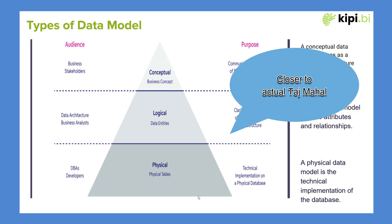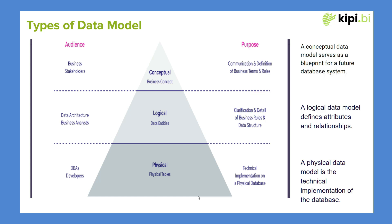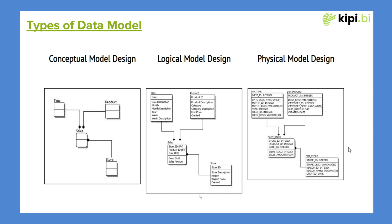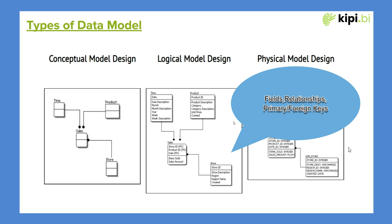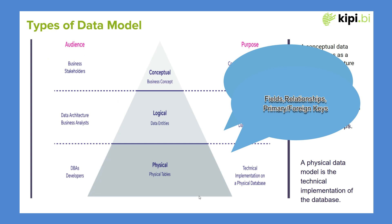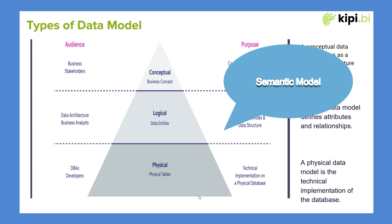Coming back to our retail store: with the logical model we now define attributes and relationships. It's not just about entities — we're talking about attributes like fields: for a product you'll have product ID, description, and category. Relationships and primary keys and foreign keys are defined. For a sales transaction table, a particular product can have multiple rows, same for store ID and date since there can be multiple transactions in a day. The main audience here are data architects and business analysts, and this logical model is what you replicate in Tableau or Power BI as a semantic model.